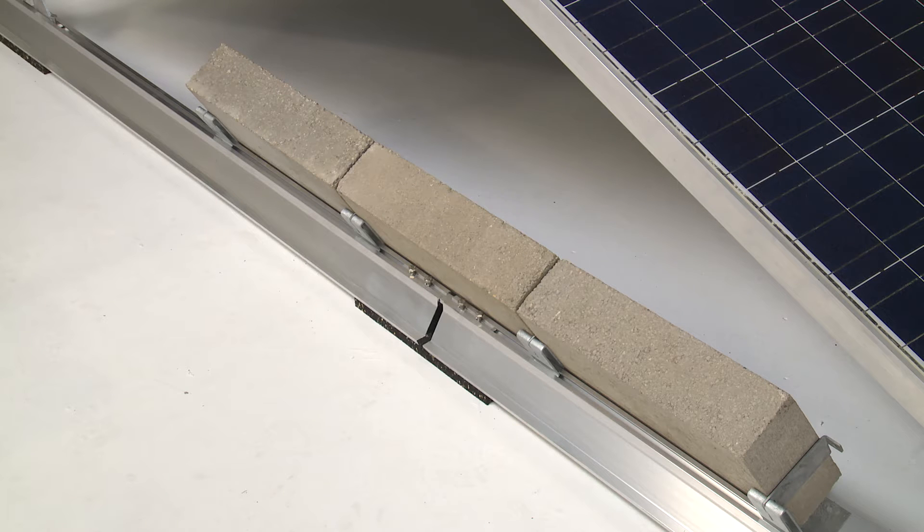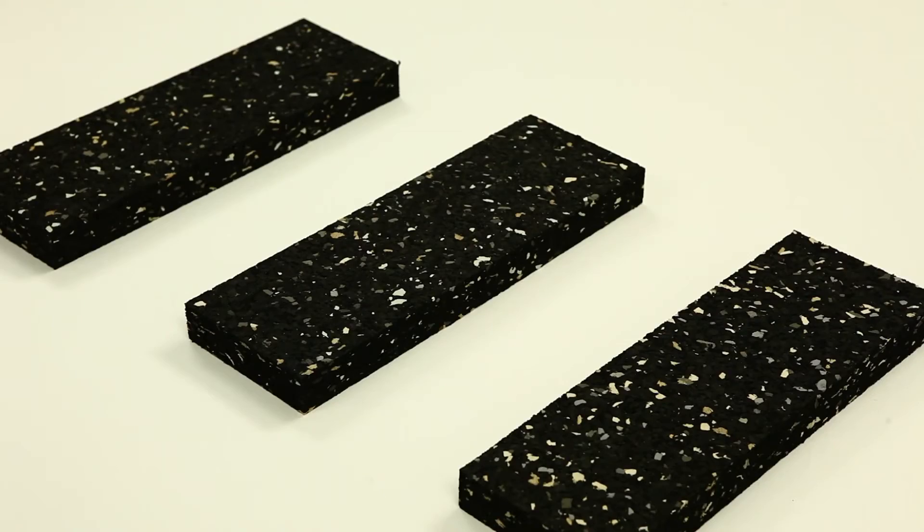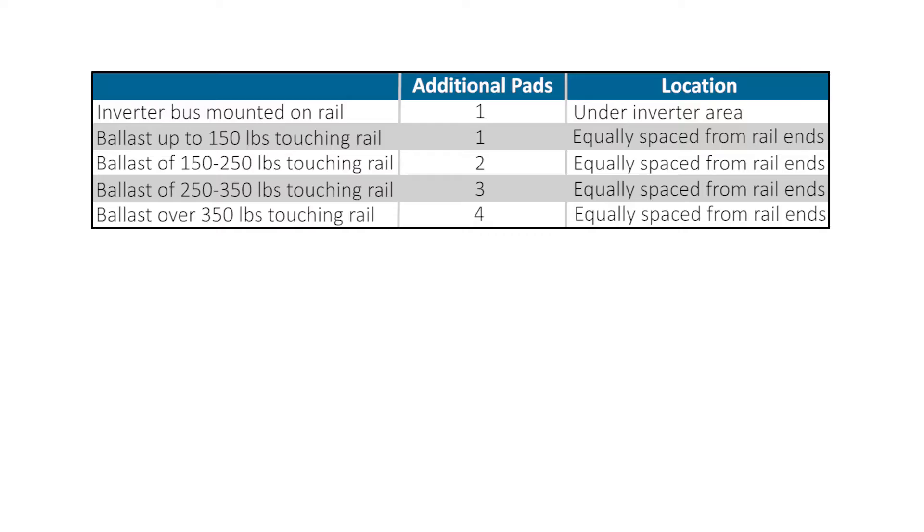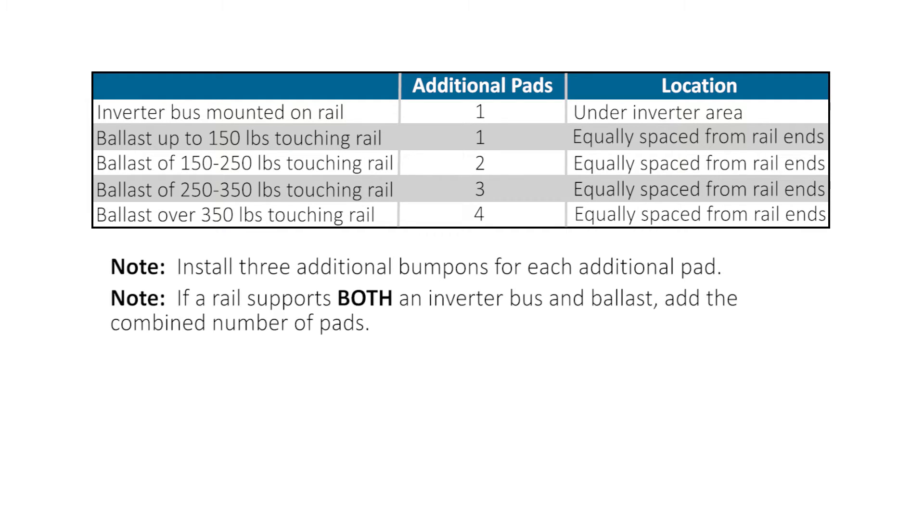For rails that support ballast, inverter buses, or other equipment, additional roof pads are required to distribute the weight on the roof. Install the roof pads according to the specified ballast weight instructions that are also listed in the DUO manual. Install three additional bump-ons for each additional pad. If a rail supports both an inverter and ballast, add the combined number of pads.